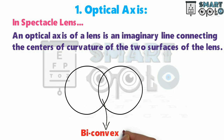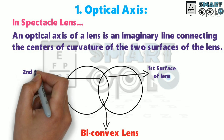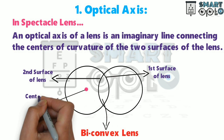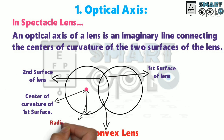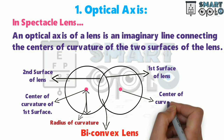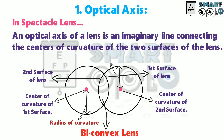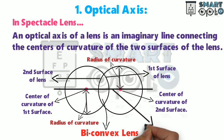In this bi-convex lens, this is the first surface of the lens, and this is the second surface of the lens. This dot is the center of curvature of the first surface, and the distance is the radius of curvature. This dot is the center of curvature of the second surface, and this is the radius of curvature. The final line which runs through the center of curvature of the first and second surface is known as the optical axis.